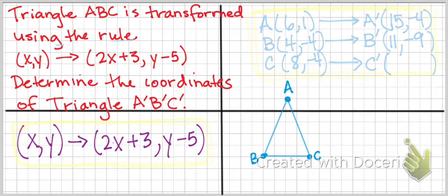Now on to C. So our original X, Y for point C is (8, -4). Now how is it going to change? Well, our new X coordinate is going to be 2 times our original X coordinate, 2 times 8, plus 3.